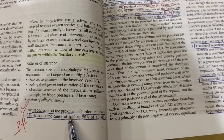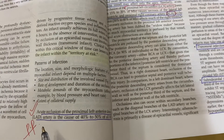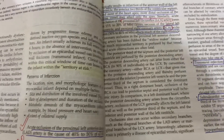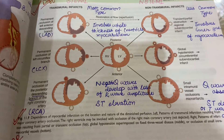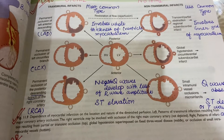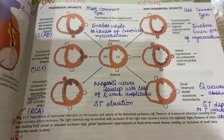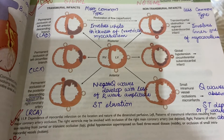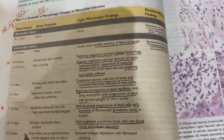Then we have the acute occlusion of the proximal left anterior descending artery and its consequences — this is important from the ACQ and past papers point of view. Then the difference between transmural infarcts, also known as ST-segment elevated MI, and non-transmural infarcts, also known as non-ST-segment elevated MI — this difference is important for the ACQ point of view.